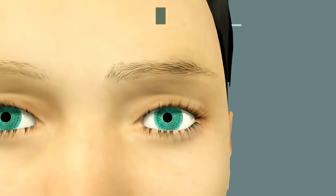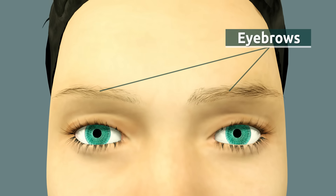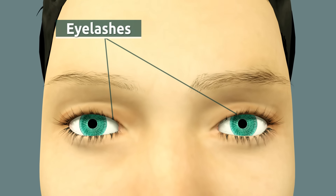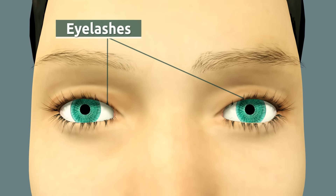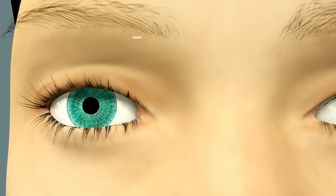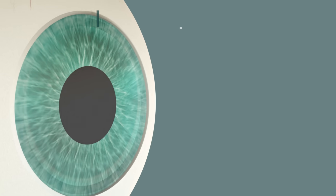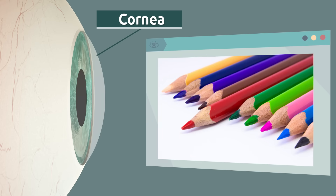The function of the eyebrows is to protect the eye from sweat or rain. The function of the eyelashes is to protect the eye from dust or sand. Did you know that eyelashes also shield our eyes from direct sunlight?